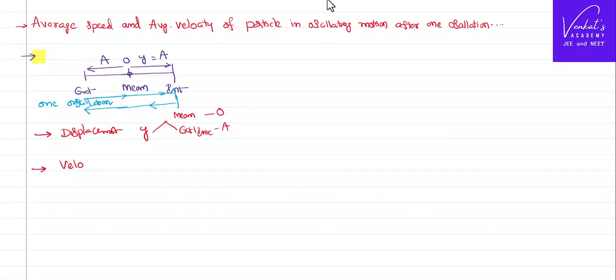Velocity - we have derived equations for velocity as v equal to omega into root of a square minus y square. We have derived this, you can check this derivation in other videos of this chapter. So at mean position, what do you mean by mean position? Displacement is 0. If you write displacement equal to 0, velocity becomes...